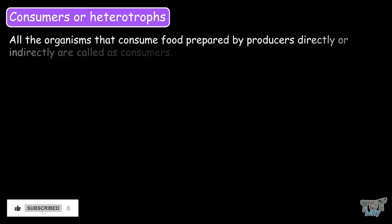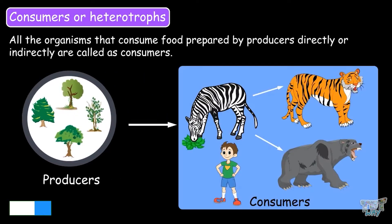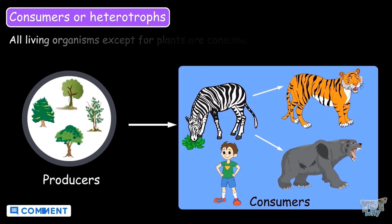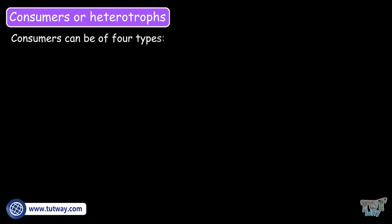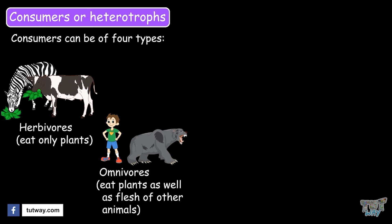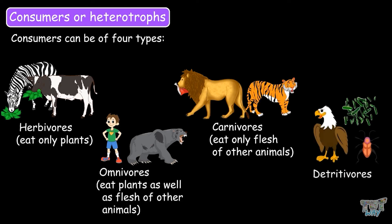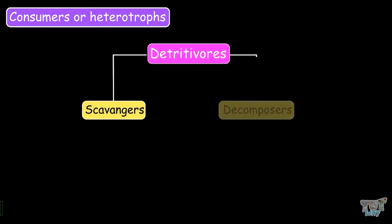Consumers or heterotrophs. All the organisms that consume food prepared by producers directly or indirectly are called consumers. All living organisms except for plants are consumers, and consumers can be of four types: herbivores that only eat plants, omnivores that eat plants as well as flesh of other animals, carnivores that eat flesh of other animals, and the fourth type are detritivores, which are further of two types: scavengers and decomposers.